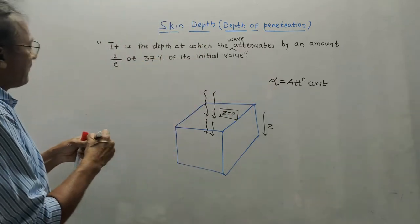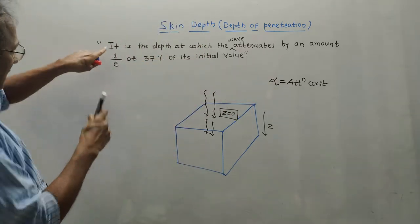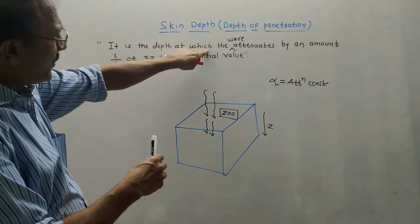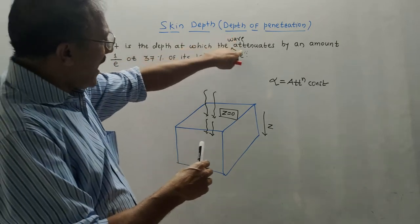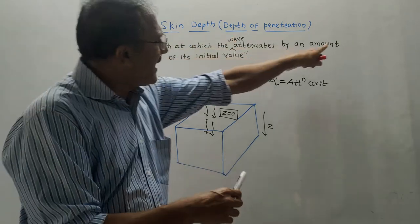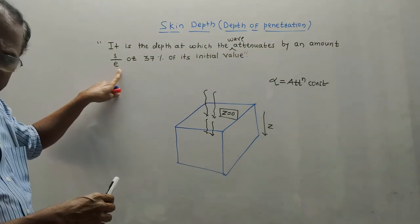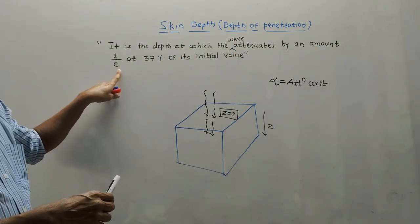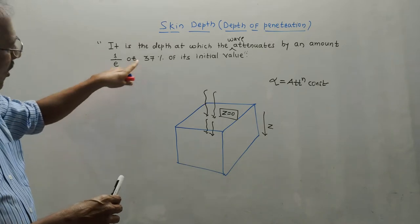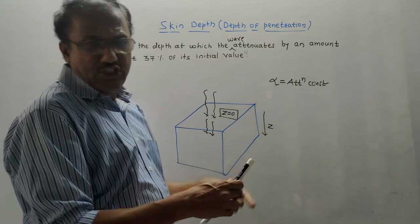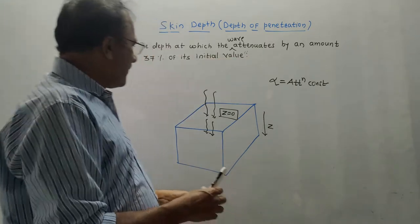Now, the definition of skin depth is: it is the depth at which the wave attenuates by an amount 1/e — where e is the mathematical term — or 37% of its initial value.